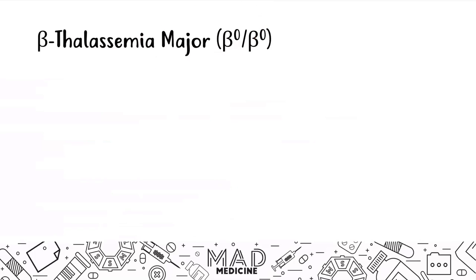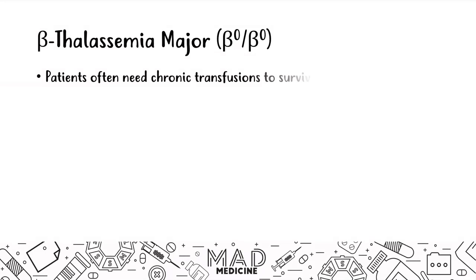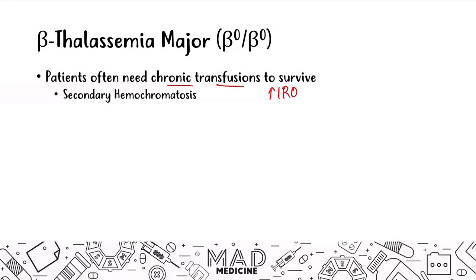When it comes to beta thalassemia major, these patients are going to need chronic transfusions in order to survive. They don't have proper hemoglobin production — no beta chain production at all. So what else is in the blood transfusions you're giving them? Iron — and that's going to lead them to secondary hemochromatosis. Because they are getting chronic transfusions, they are getting an increase of iron, and our body doesn't really have a way of getting rid of iron.